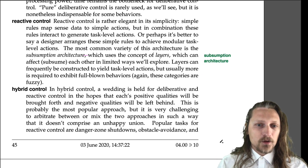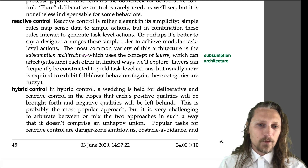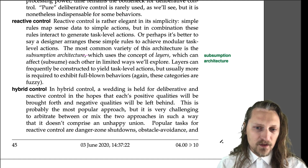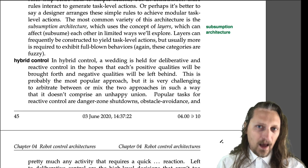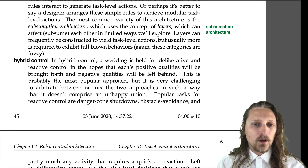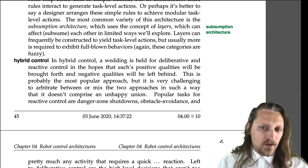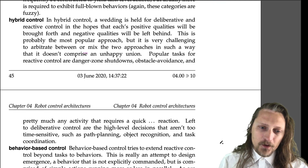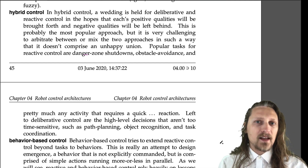Hybrid control. In hybrid control, a wedding is held for deliberative and reactive control in the hopes that each's positive qualities will be brought forth and negative qualities will be left behind — we marry them together. This is probably the most popular approach, but it is very challenging to arbitrate between or mix the two approaches in such a way that it doesn't comprise an unhappy union. Popular tasks for reactive control are danger zone shutdowns, obstacle avoidance, and pretty much any activity that requires a quick reaction. Left to deliberative control are the high-level decisions that aren't too time sensitive, such as path planning, object recognition, and task coordination.